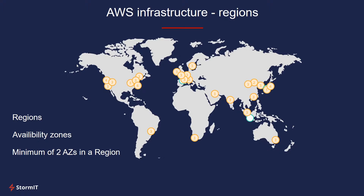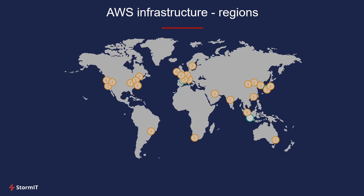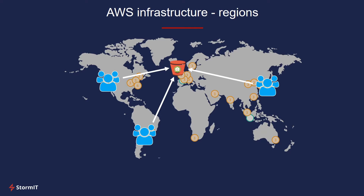So now let's consider an example where you're running an application for sharing and distributing photos for your users. Let's say you're storing these photos in an S3 bucket located in Ireland, but your users are from all around the world. So what happens when they try to access their photos? Well, it takes a lot of time because the distance is quite far, so the latency is quite high. And today it's all about speed, ease of use, and performance — so your users are not very happy about that.